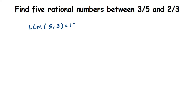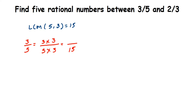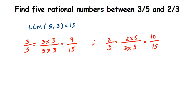Now we're going to make the denominators the same for both numbers. For 3/5, we find the equivalent rational number with denominator 15. Multiply 5 by 3 to get 15, so multiply both numerator and denominator by 3: that gives 9/15. Similarly for 2/3, multiply both by 5 to get 10/15. So we have 9/15 and 10/15.